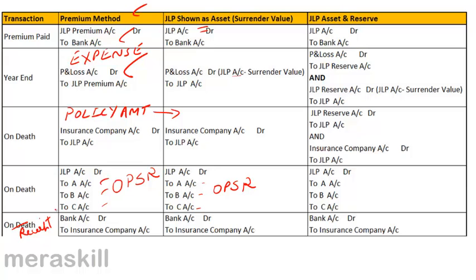Next is the joint life policy asset and reserve method. We carry the joint life policy at surrender value, and on the other side of the balance sheet we also have a joint life policy reserve account of the same amount. Entries: joint life policy account debit to bank with the premium paid, creating an asset. Profit and loss account debit to joint life policy reserve account also with the premium amount, creating the reserve. However, we carry forward the asset at surrender value, so we reduce the asset and reduce the reserve: joint life policy reserve account debit to joint life policy account with the balance minus the surrender value.